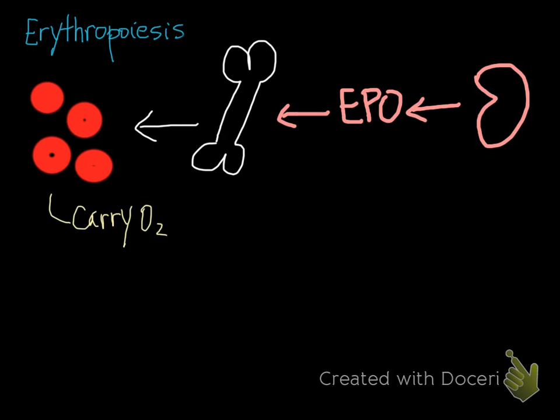It is increased, the production of EPO, when you have decreases in oxygen. This most commonly happens with anemia, decreases in inspired oxygen such as being at a high altitude, or even heart failure where you have poor circulation, and all of these result in an increase in EPO and then increased erythropoiesis, which we're going to talk more about.